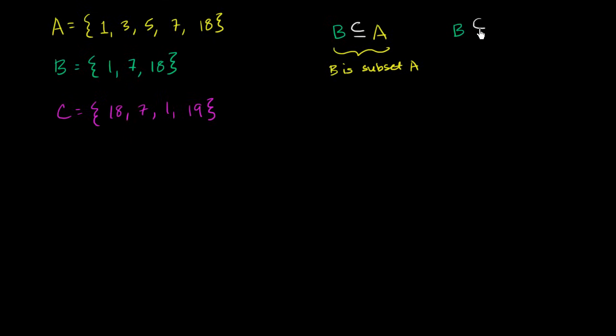And the way you do that is you're essentially, you can almost imagine that this is kind of a less than or equal sign, and then you kind of cross out the equal part of the less than or equal sign. So this means a strict subset, which means everything that is in B is a member of A, but everything that's in A is not a member of B. This is B is a strict or proper subset.